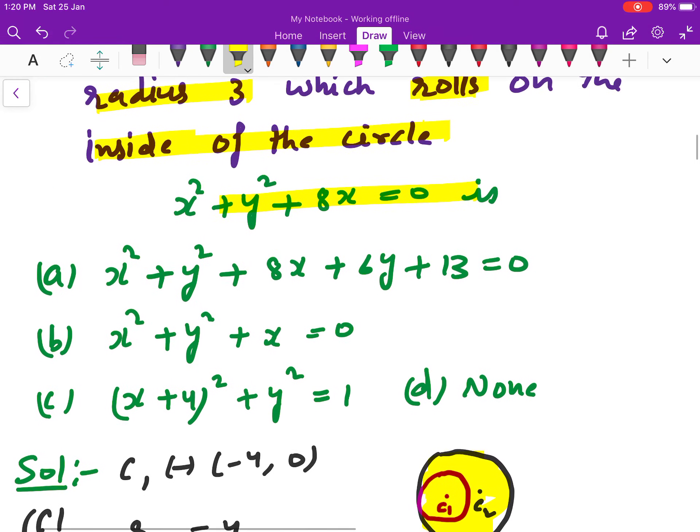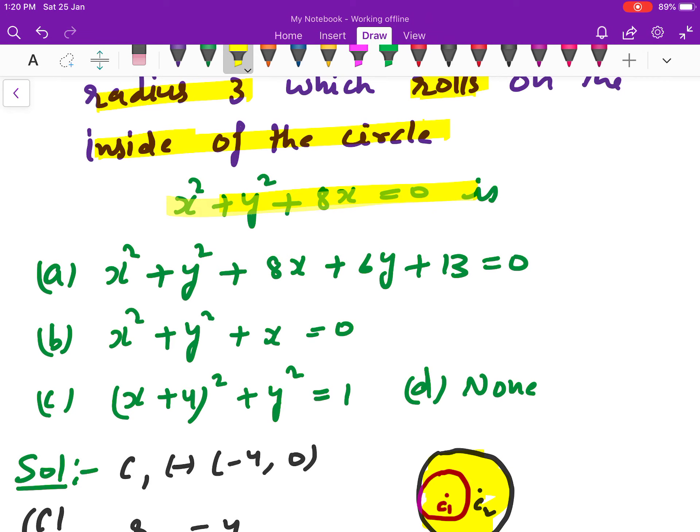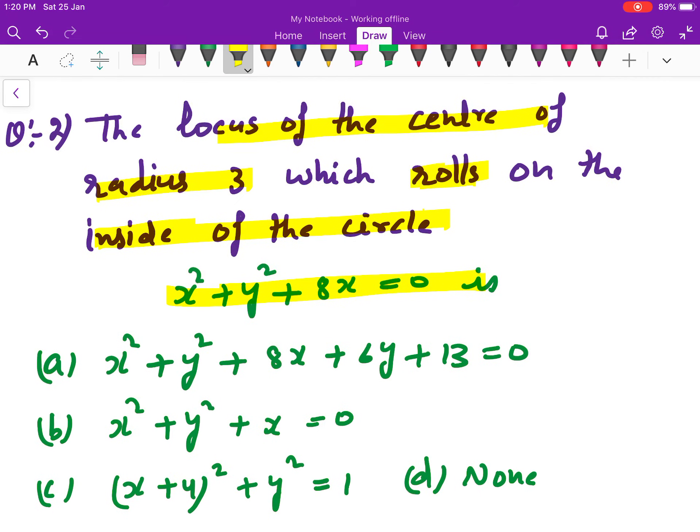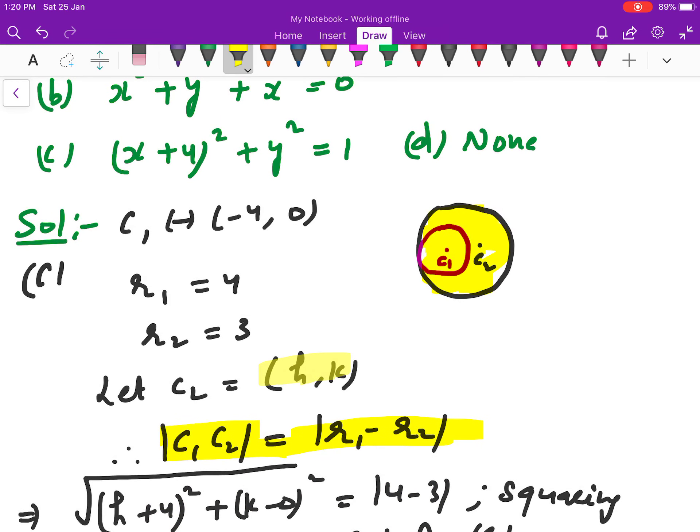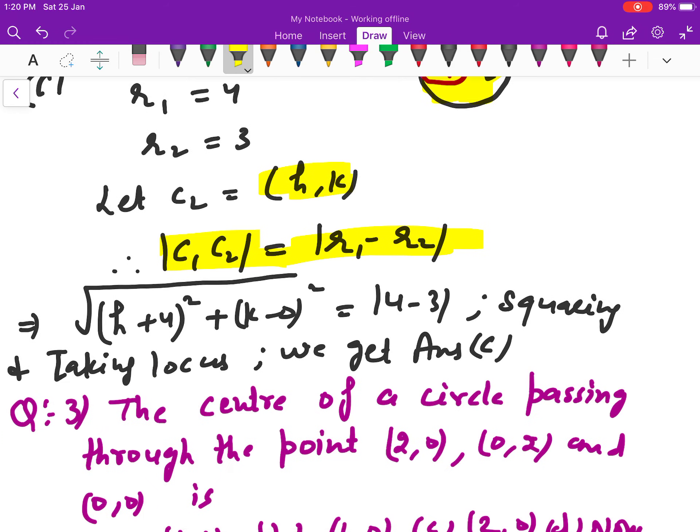This is C1C2 mod is equal to R1 minus R2 mode. This is why we need both centers and both radius. One circle is given so you can find out the center radius. The other circle has the radius given. We need to find center H, K suppose, and use this formula: C1C2 mode equals R1 minus R2, simply. We need to find out the distance formula.